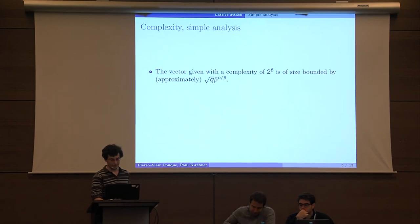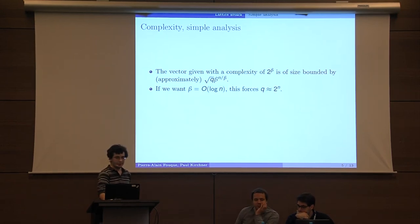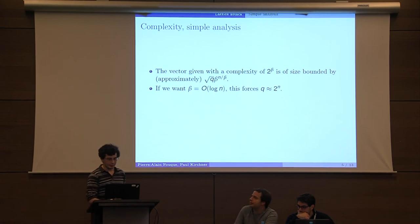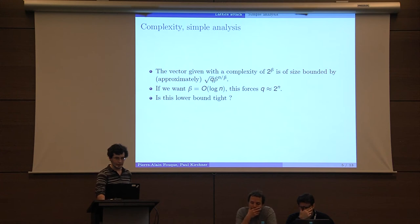The second part is the approximation factor. If we want a polynomial algorithm, we must have beta which is small and its forces modulus which is almost exponential. But is this lower bound tight? It's unclear.